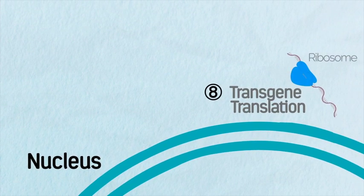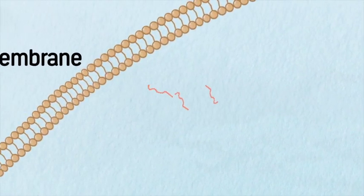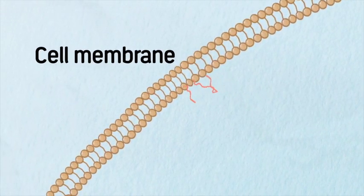Once produced, the mini or microdystrophin is transported to the cell membrane to function.